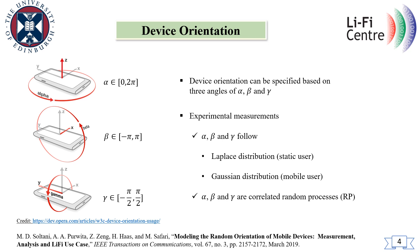The pause time can be modeled as exponential distributions. Device orientation is an important factor that can affect the performance of user equipment in not only Li-Fi systems but also in other systems such as millimeter wave and terahertz communications. The device orientation can be specified based on three angles of alpha, beta, and gamma, where alpha determines the rotation about the z-axis, beta is the rotation about the x-axis, and gamma defines the amount of rotation about the y-axis. In order to determine statistics of these three angles, we conducted a set of measurements for both static and mobile users. The measurement results show that the angles alpha, beta, and gamma follow a Laplace distribution for static users while they are well fitted to a Gaussian distribution for mobile users. Moreover, it is demonstrated that alpha, beta, and gamma are correlated random processes.